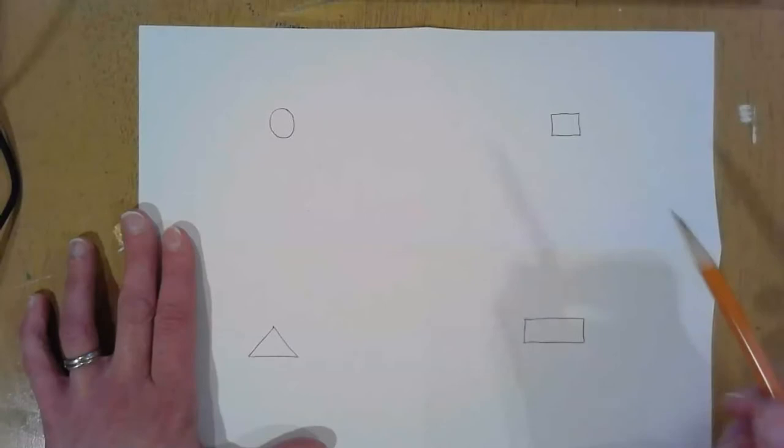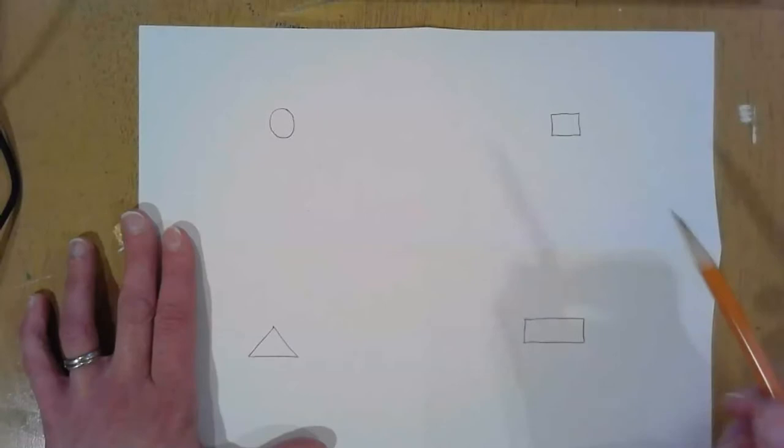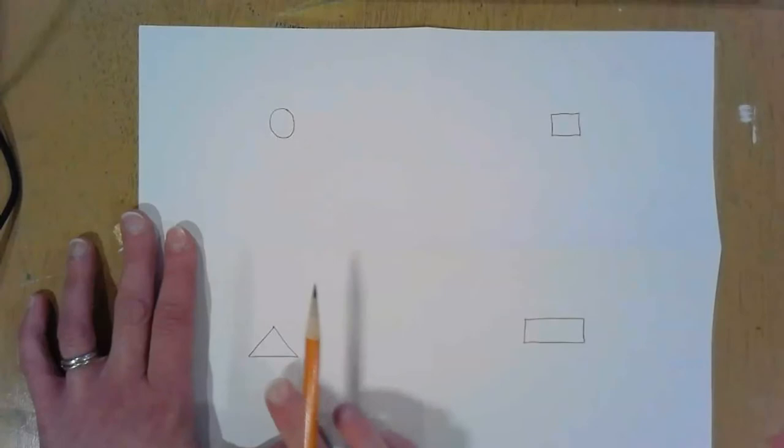And then we're going to finish it up with a teeny tiny rectangle. And a rectangle has four sides but two are short and two are long. So it's like a square only stretched out longer. So we have a circle, a square, a triangle, a rectangle.